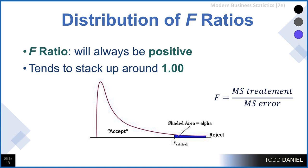By dividing the between variance by the within variance, we're canceling out the effects of error, leaving us with the treatment effect. If there is no treatment effect, it's basically randomness divided by randomness. Anything divided by itself is one, so if the F-ratio is non-significant, those values will tend to stack up around one, and the F-ratio will always be positive. The mean square for a group is the sum of squares divided by n, so the F-ratio is the mean square for the treatment divided by the mean square for the error term.